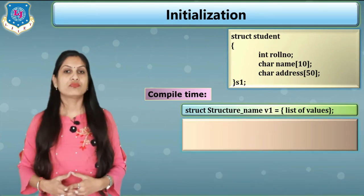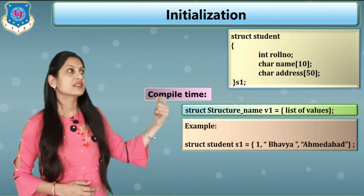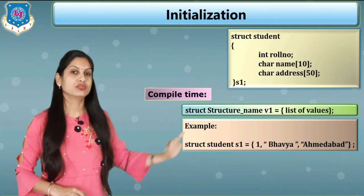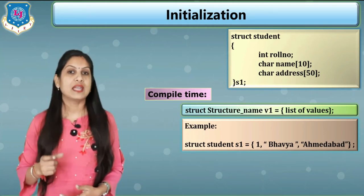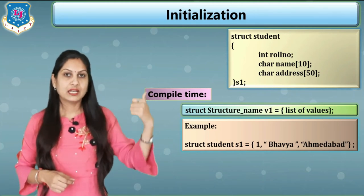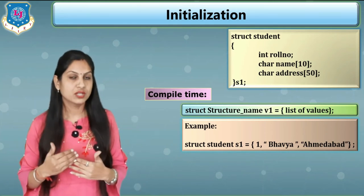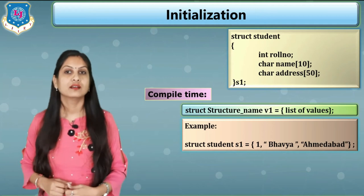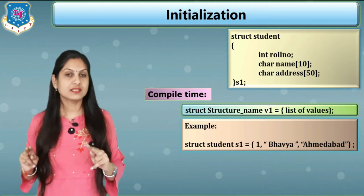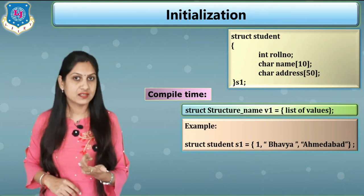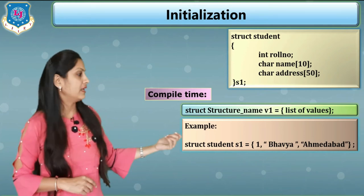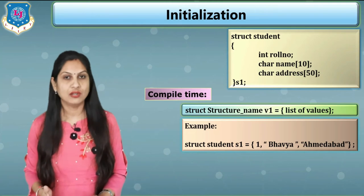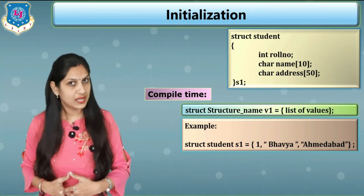For compile time initialization, the syntax is: struct, structure name, variable name such as v1, equals, then inside curly brackets the list of values, and semicolon. In the example, I write struct student with variable s1 equal to a list of values. You must maintain the proper order from the definition. Since the definition has role number first, then name, then address, the values are: 1, then "Bhavya" in double quotes because it is a string, then "Ahmedabad" for address.